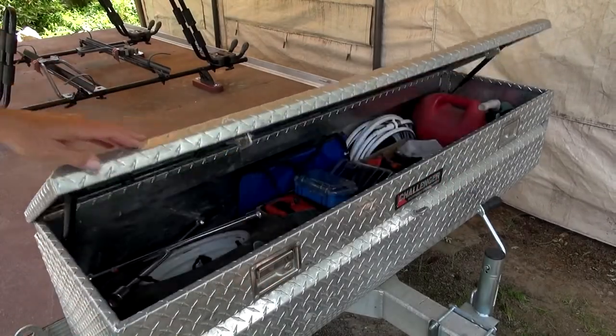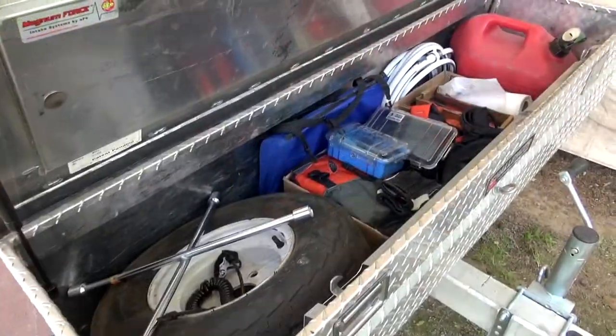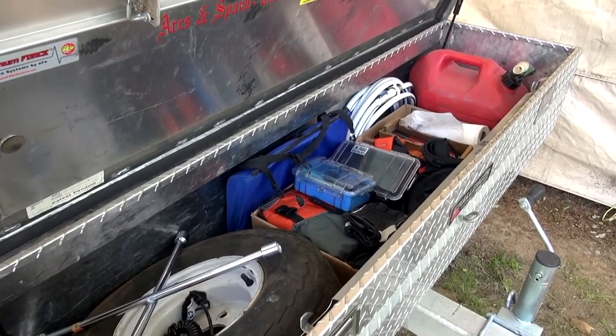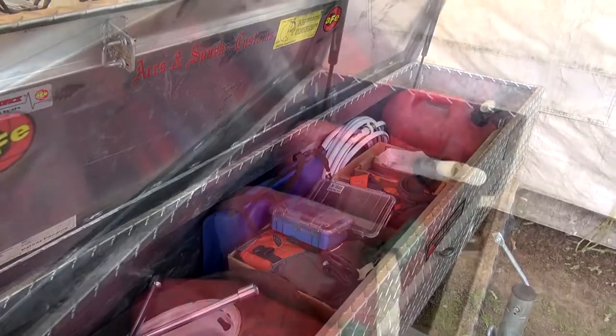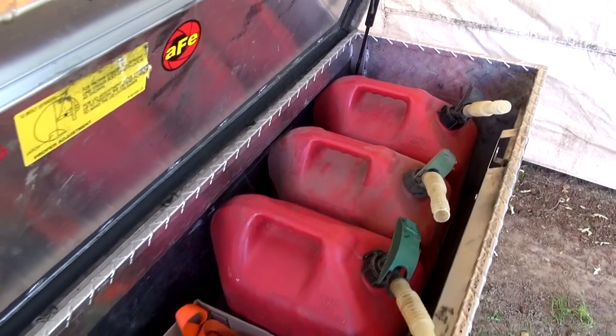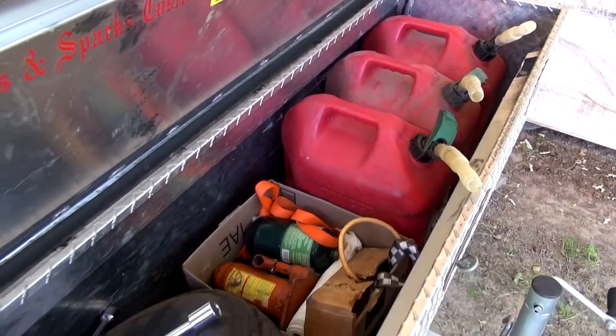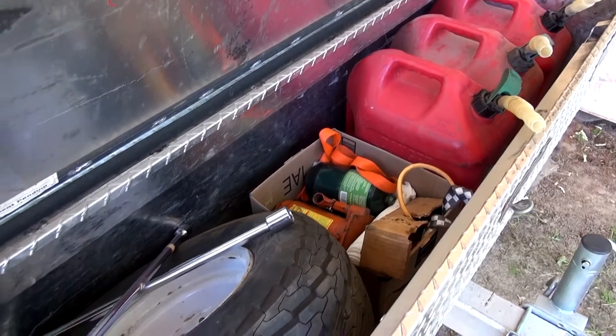The cargo box holds utility items that are dirty, bulky, or fuming. I already had this truck bed toolbox, so I just needed to find a way to attach it to the front of the trailer. I didn't want to take up space on the deck itself, so I mounted it on the trailer's tongue.